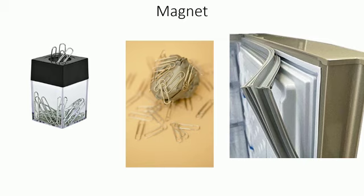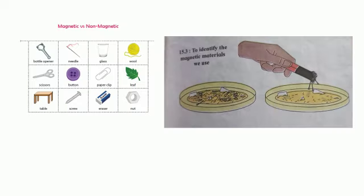This magnet attracts iron objects and other objects to itself. The material to which objects made from iron, nickel, cobalt, etc. get attracted is called a magnet. This property of a material is called magnetism. Iron, nickel, and cobalt are metals.